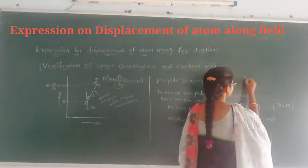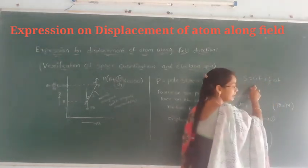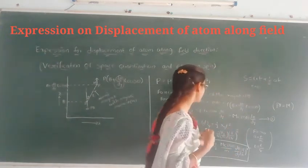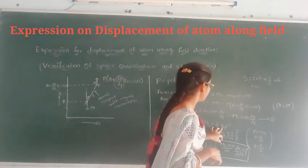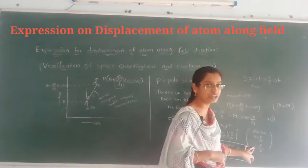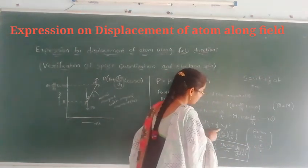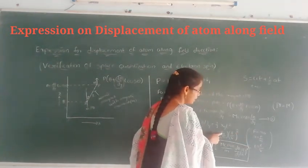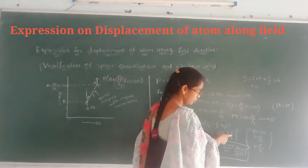We know that S equals ut plus half at squared. And initially time t equals zero. Then we consider only half at squared, where A is the acceleration. From Newton's second law, F equals MA. A equals F by M. And we know that T equals L by V.